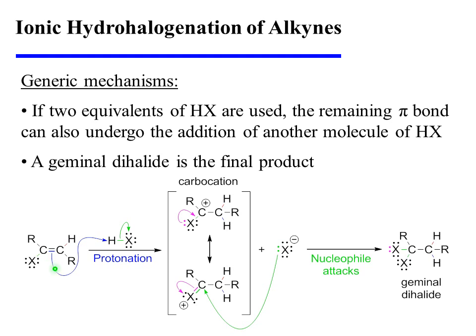The second addition begins with protonation of the remaining pi bond, affording the carbocation adjacent to the halogen. That particular carbocation can be resonance stabilized by delocalization of the positive charge onto the halogen. In the second step, the halide attacks the electrophilic carbon — the carbon that has carbocation character — and a geminal dihalide product results.